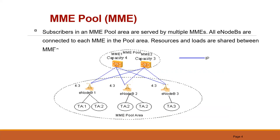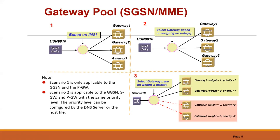Similarly, with an MME pool, each eNodeB is connected with every MME in the network. If one MME goes down, the eNodeB continues to be served by another MME. There is also reduced signaling when a user moves from the coverage of one MME to another. There is a GGSN pool concept as well — more of a GGSN load balancing. The SGSN selects a GGSN based on APN; you can add multiple APNs and ensure selection is based on priority and weight. If one GGSN goes down, the other GGSN serves new subscribers, though existing sessions have to be disconnected.